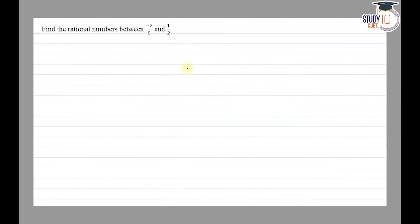Hello everyone, this question appears in class 8 NCERT chapter on rational numbers. This is the fourth question of exercise 1.2. The question says find the rational numbers between -2/5 and 1/2.